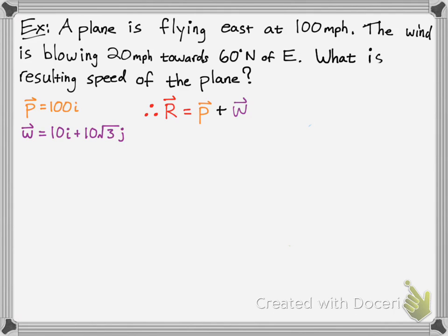Say there was an airplane flying east at 100 miles an hour, and the wind was blowing 20 miles an hour towards 60 degrees north of east. What is the resulting speed of the plane?